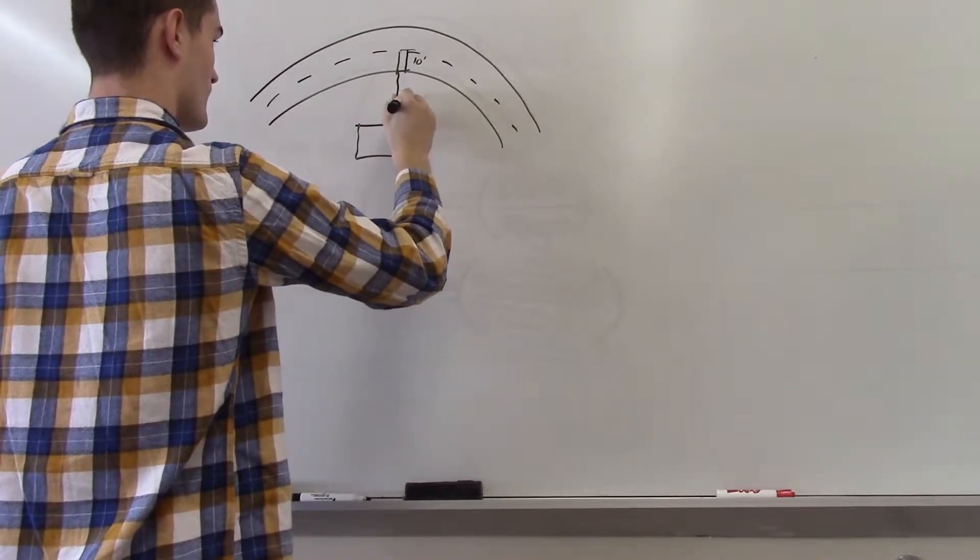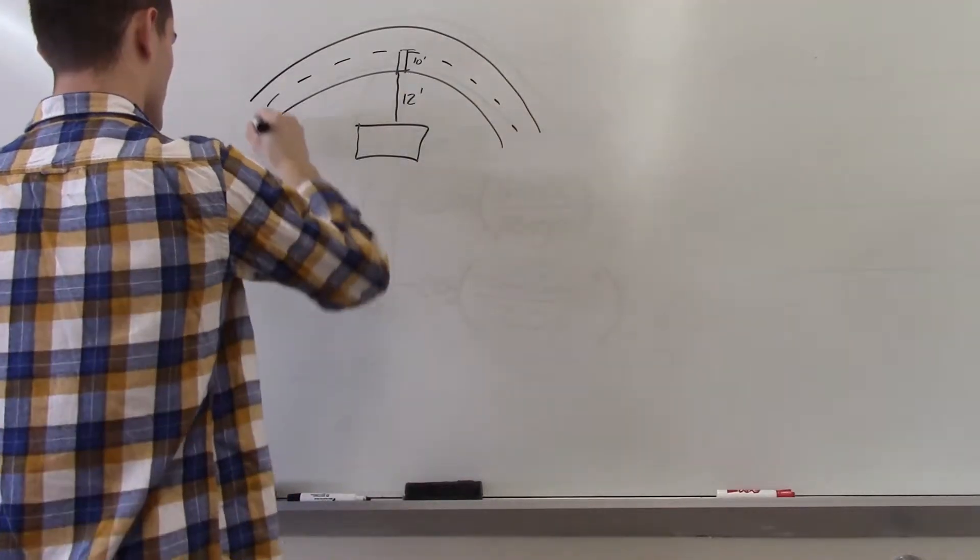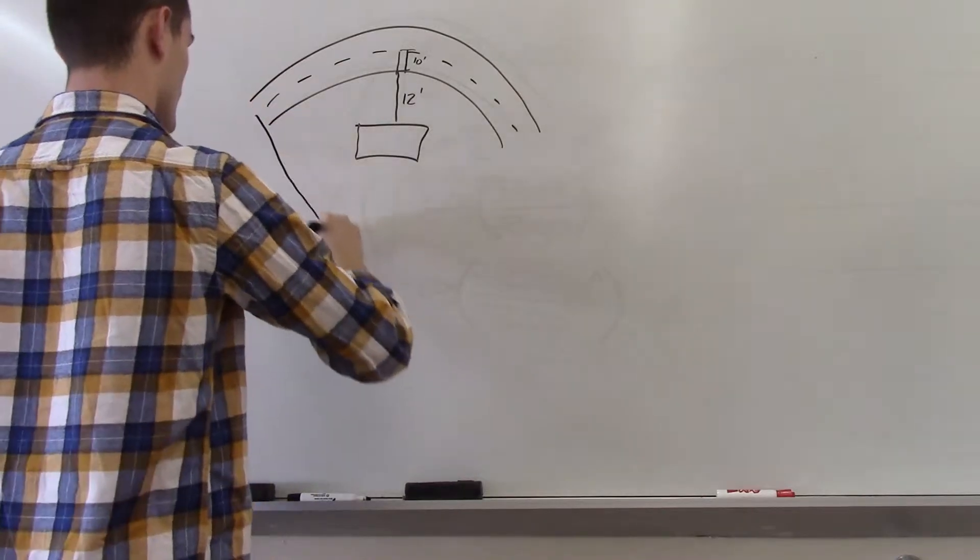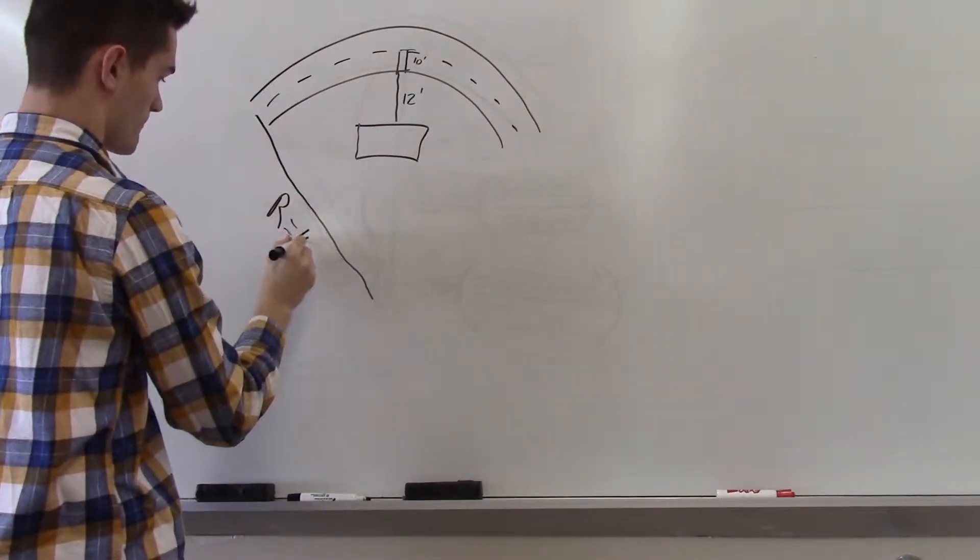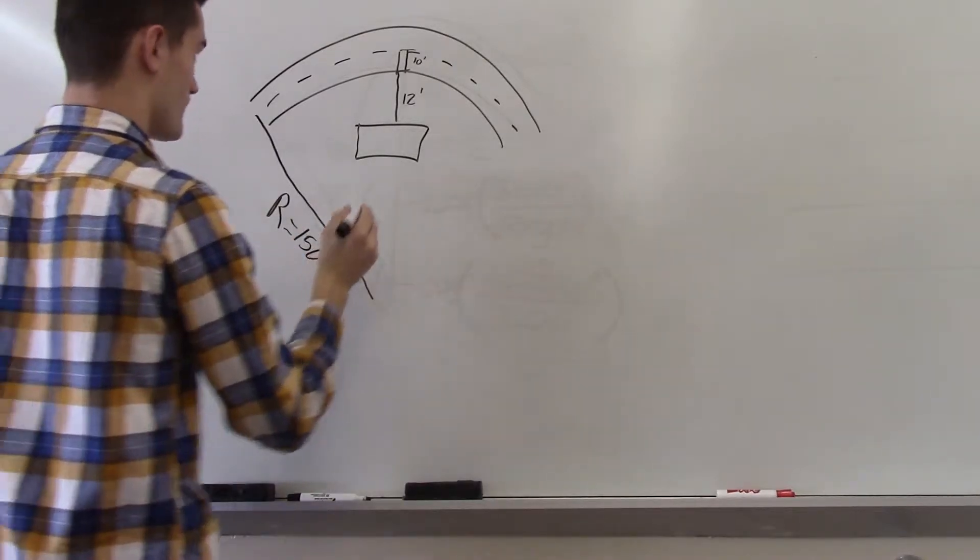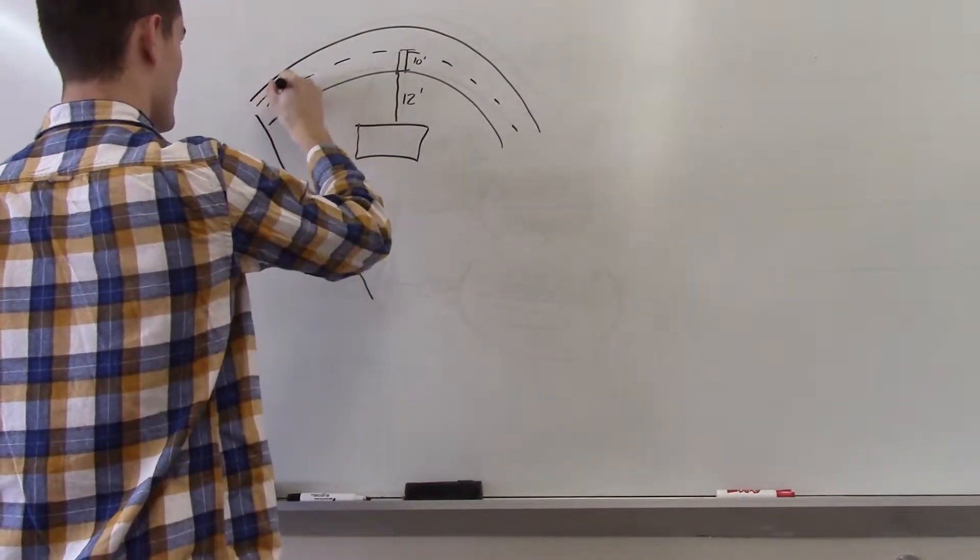Does the design meet the requirement for stopping sight distance? Begin by drawing a free body diagram of the problem to help you visualize what's going on. We will draw the horizontal curve from the bird's eye view. Make sure to label the radius of the curve,